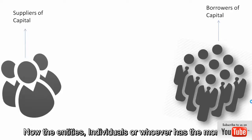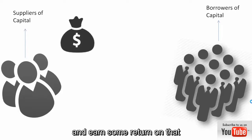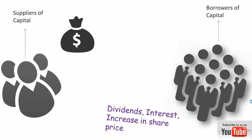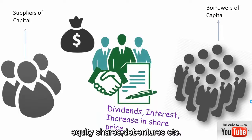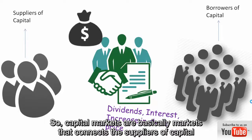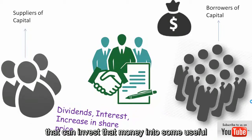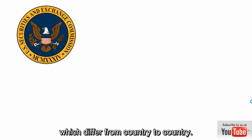The entities or individuals who have the money want to invest it and earn some return. On the other side, various entities who want money offer various types of returns by issuing financial instruments such as bonds, equity shares, debentures, etc. So capital markets connect the suppliers of capital with the borrowers of money, who can invest that money into useful economic activity. Capital markets are regulated by financial regulating agencies which differ from country to country.